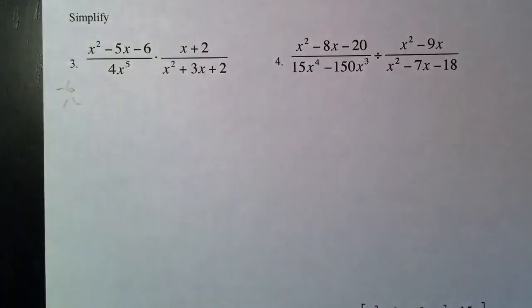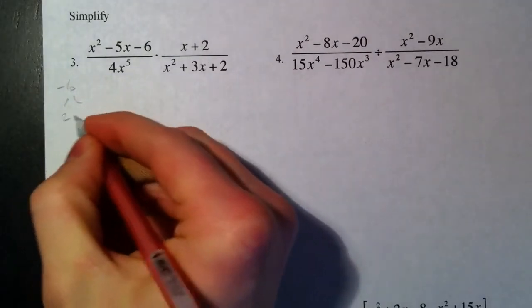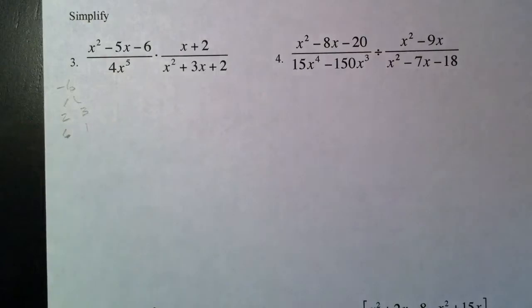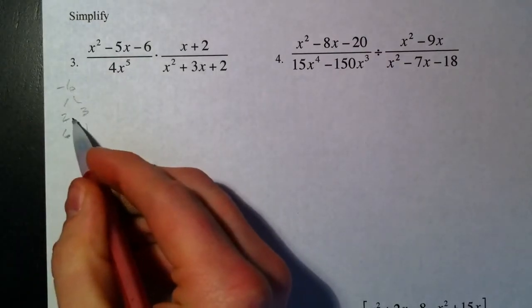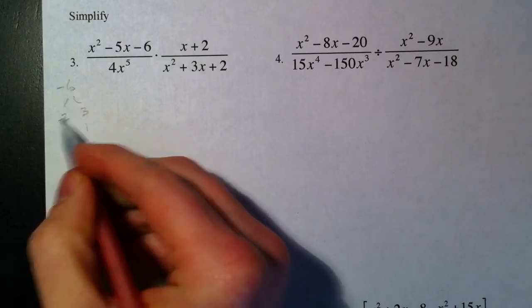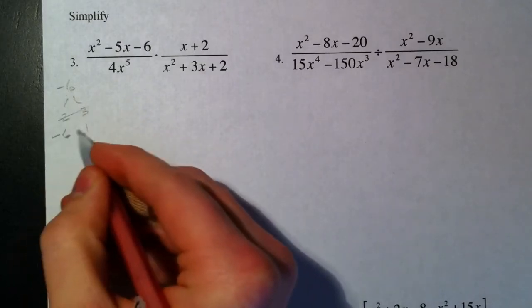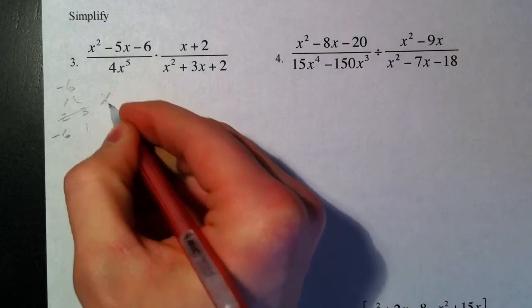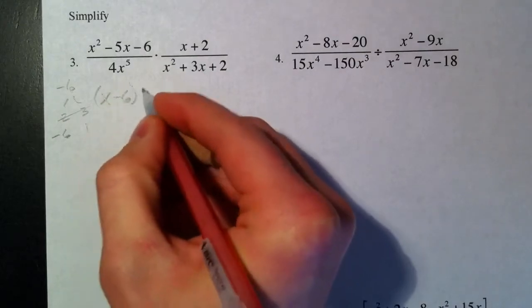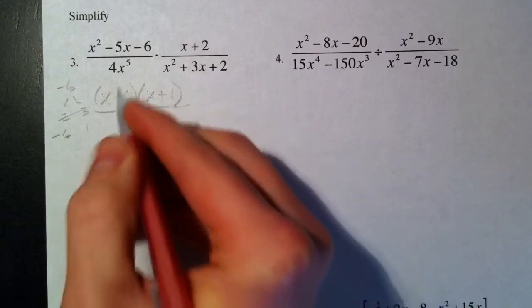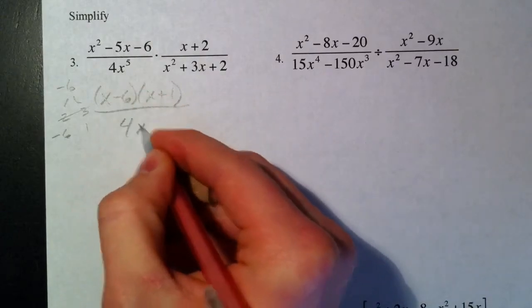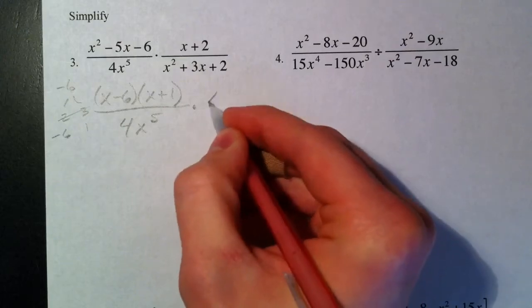What multiplies to negative 6 and adds to a negative 5? Well, you've got 2 and 3, we've got 6 and 1. So 2 and 3, one's got to be positive, one's going to be negative, so that's out of the running. We need a negative 6 and a positive 1: X minus 6, X plus 1.